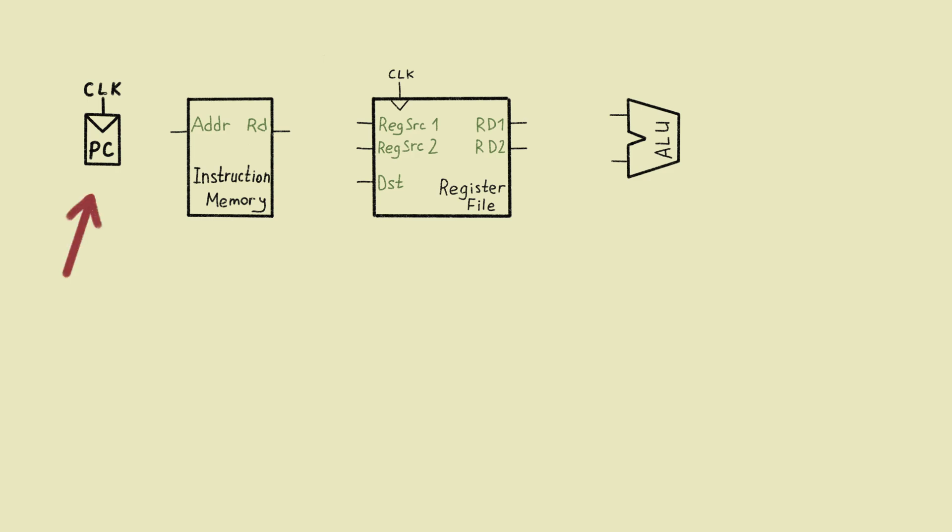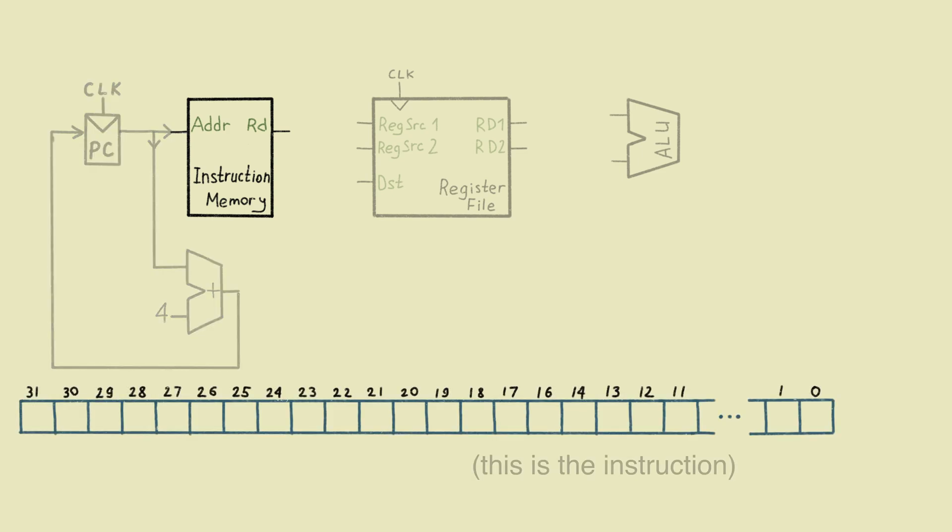Let's build all the stuff together. Here we have a program counter register, memory containing instructions, general purpose registers, and the arithmetic's unit. Program counter points to the current instruction. And let's immediately increment it by 4 for the next CPU cycle. So we are reading the current instruction. The instruction is basically a set of 32 bits. It encodes the operation to perform and register numbers, where to get arguments and where to put the result.